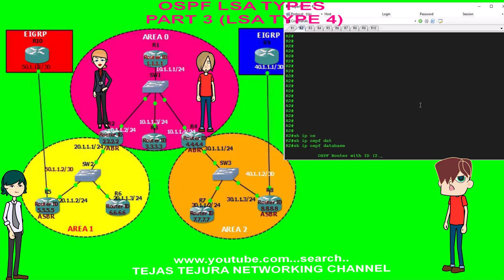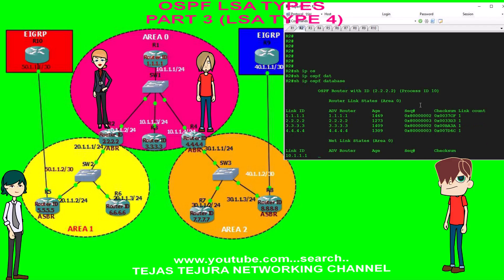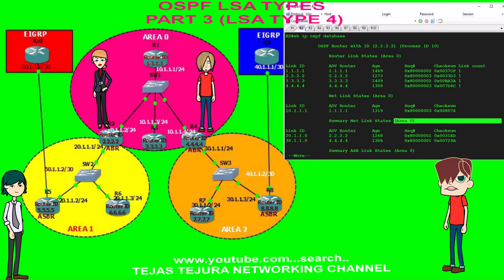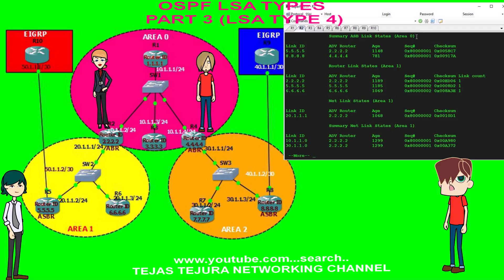On area border router R2 we will check via the command: show IP OSPF database. This is LSA type 1. This is LSA type 2. This is LSA type 3. This is LSA type 4 of area 0. You can see the ASBR information mentioned on LSA type 4.